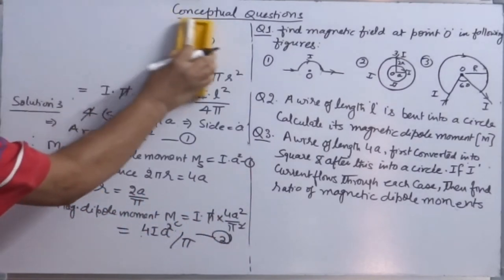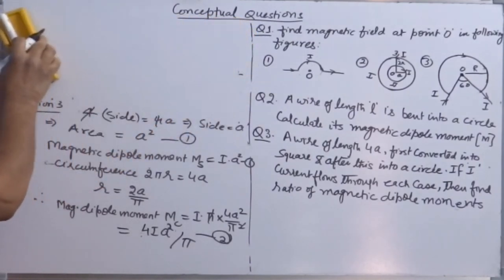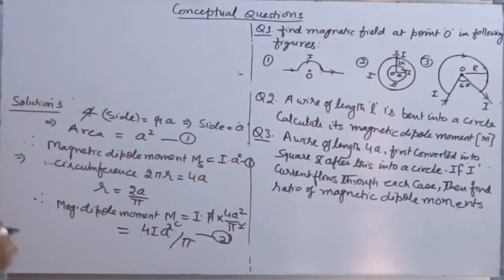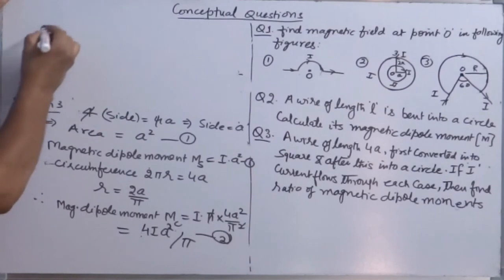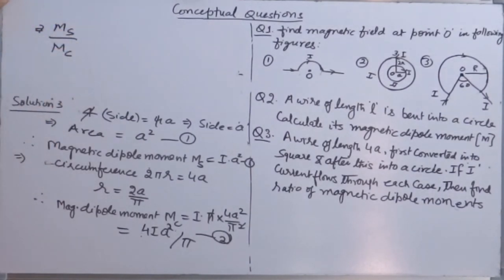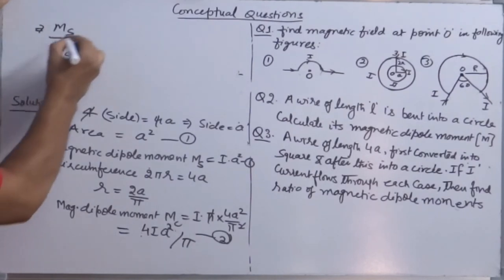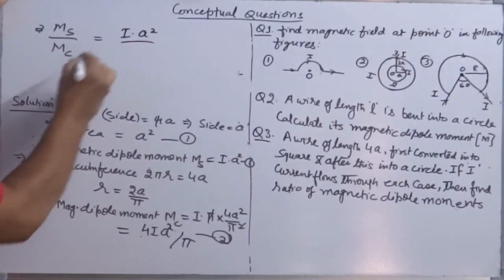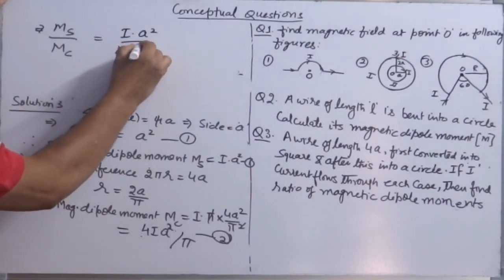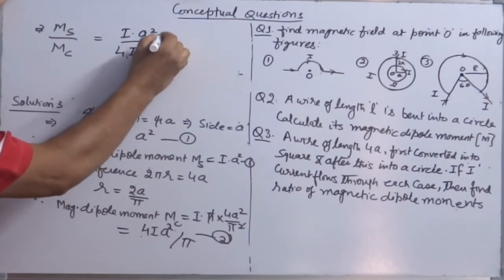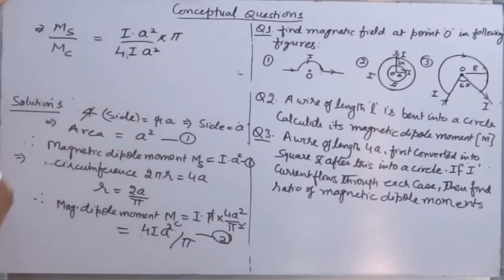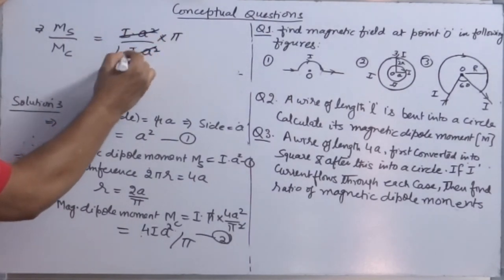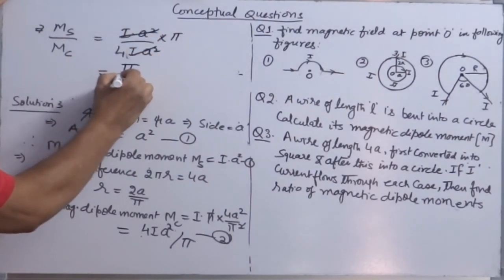Now, what is the demand of the question? Find the ratio. Means you need M_s/M_c = IA²/(4IA²/π) = π/4.